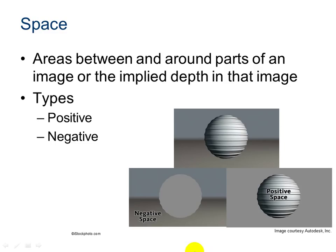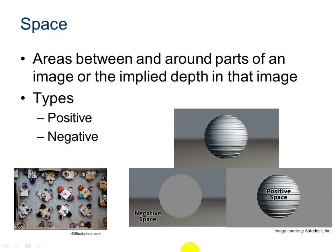What would you consider, in this picture of people dining in a restaurant, to be the positive and negative space in this photo? I consider the negative space to be this area around them — the walkway that goes through. And I consider the positive space to be the diners, because we get a real sense of depth from the smaller hat and the larger body, and the different values on the tables to show the depth from the table to the chairs.